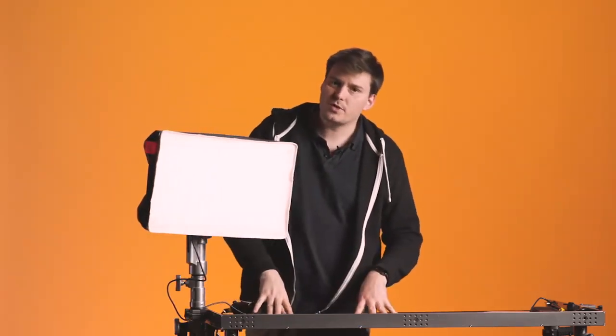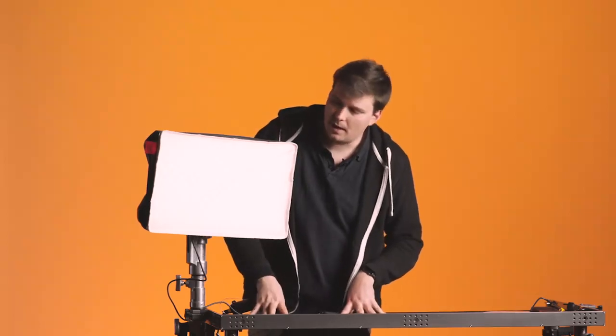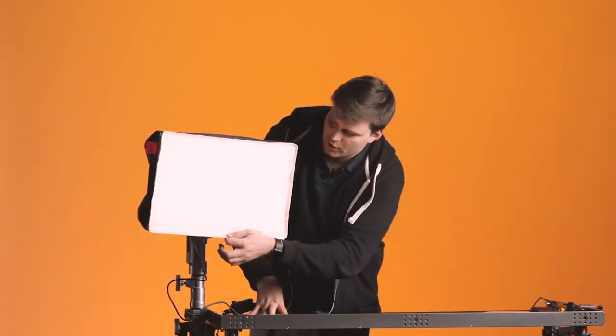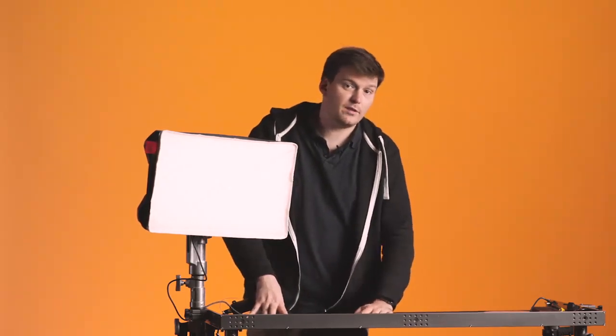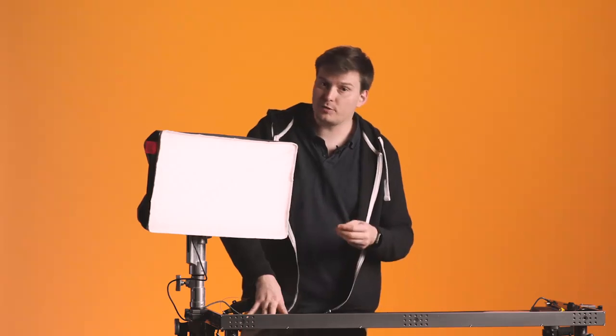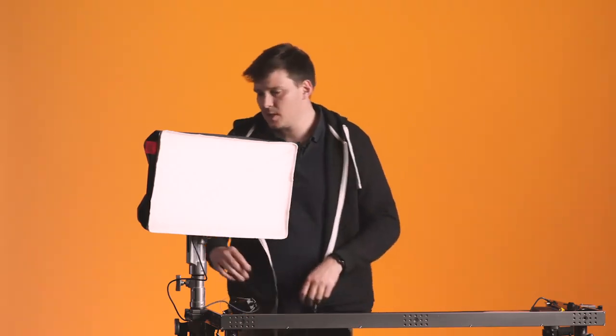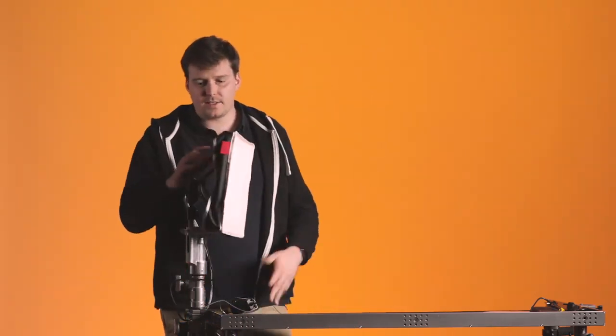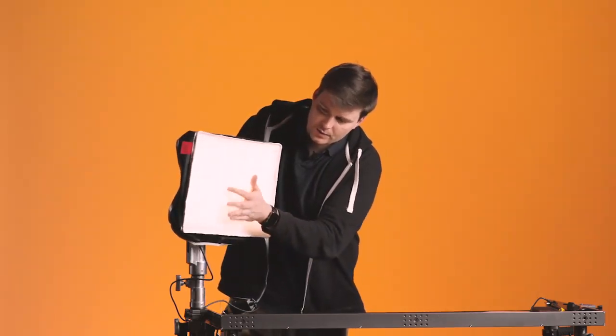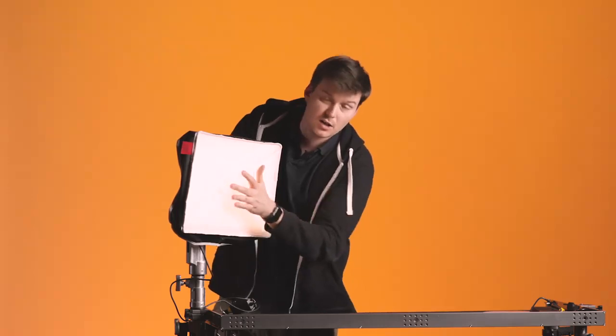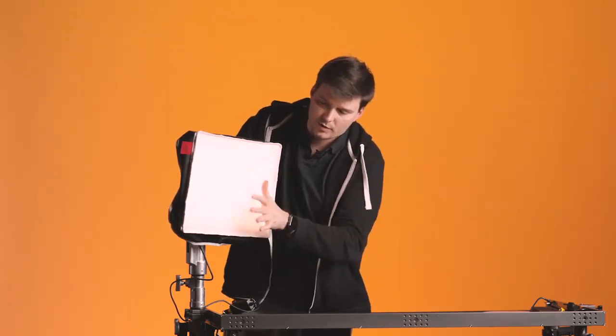So now we have the diffuser. We use the diffuser to have a better distribution of the light, to have better reflection on the object, or even for the talent it's more comfortable to look into the light source. So that's the basic diffuser. But if you still see too many LED dots and the distribution of light, the diffusion of light is not enough, we offer an accessory called the softbox.